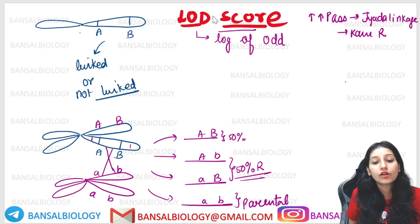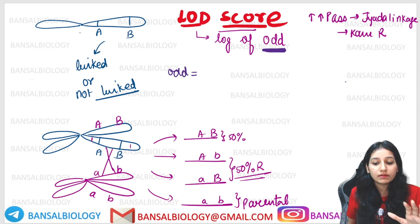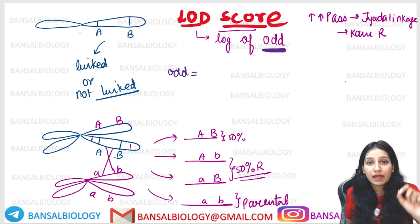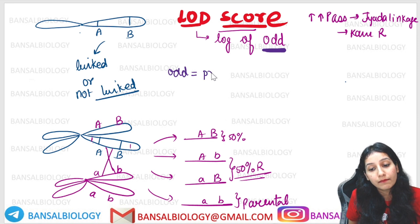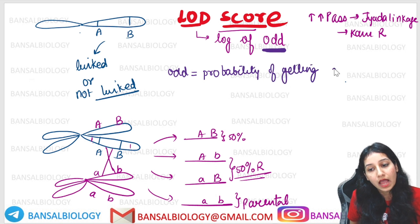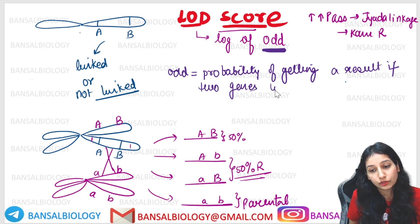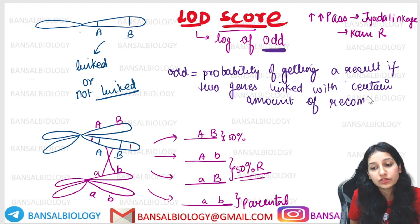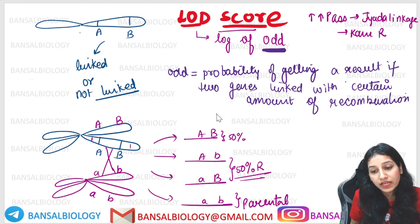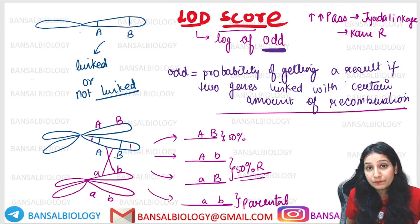The LOD score is the log of odds. What is the odds? If these two genes are linked with a certain amount of recombination, the odds represents: what is the probability of getting a result — getting a certain gamete — if the two genes are linked with a certain amount of recombination, say 10% or 20%?